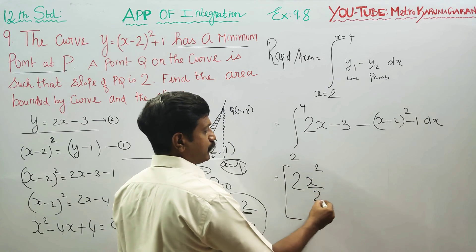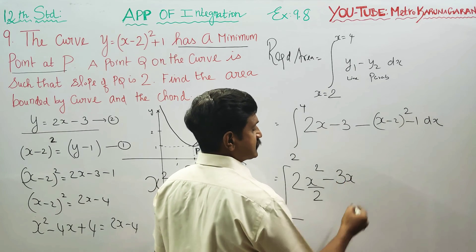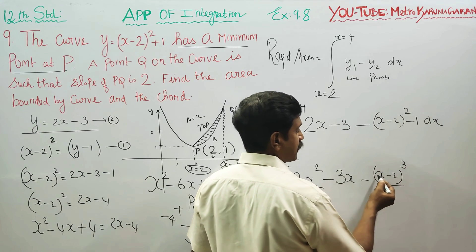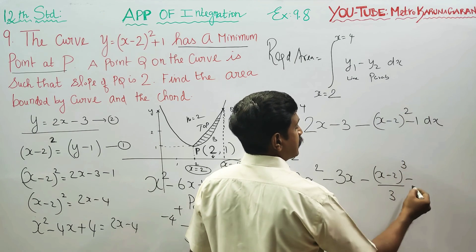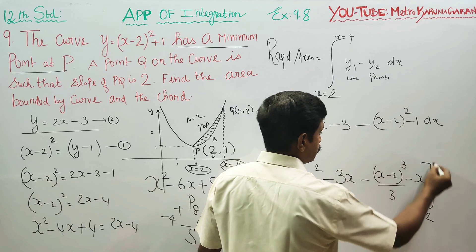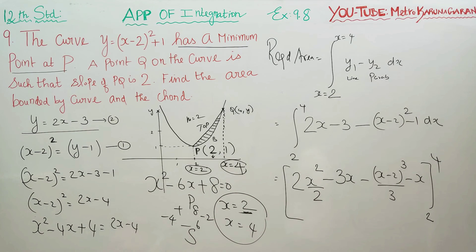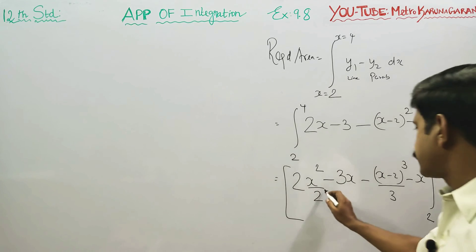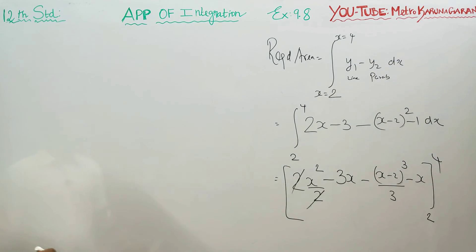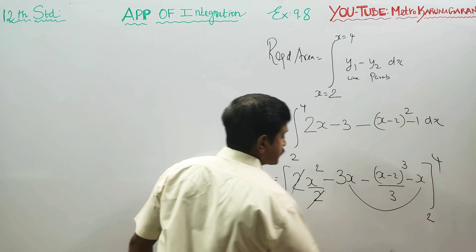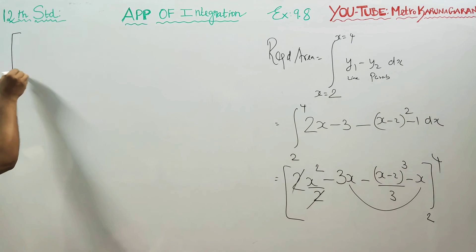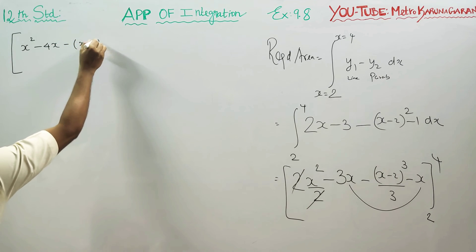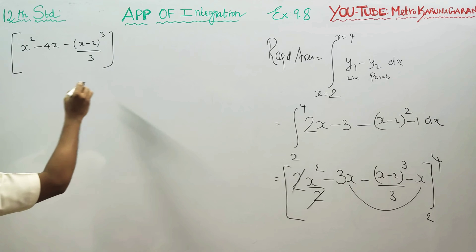Integrating, we get x squared minus 3x minus x minus 2 whole cube divided by 3, evaluated from 2 to 4. This simplifies to x squared minus 4x minus the x minus 2 whole cube by 3, with limits 2 to 4. We apply the upper and lower limits by substitution.